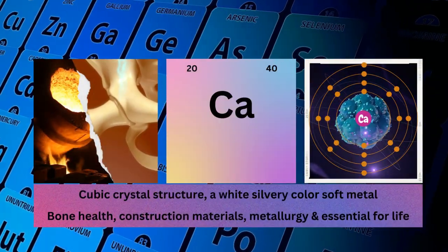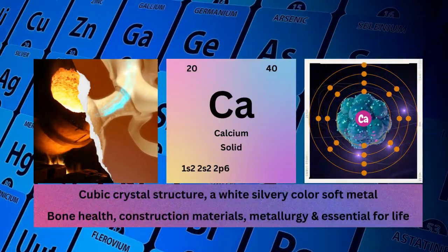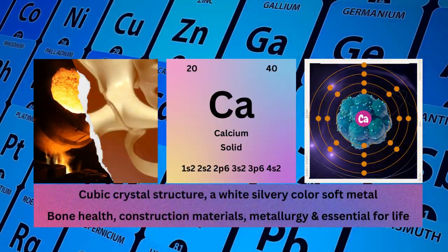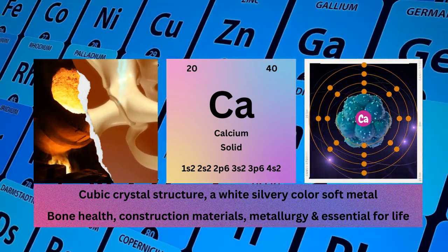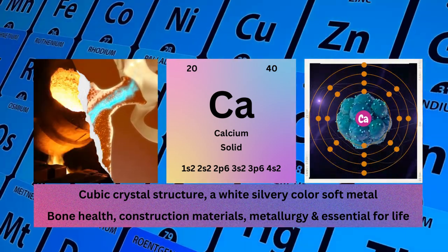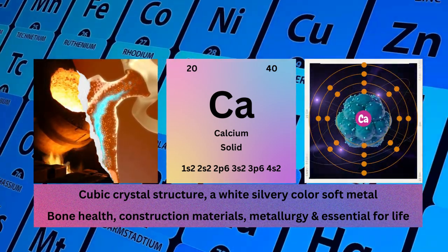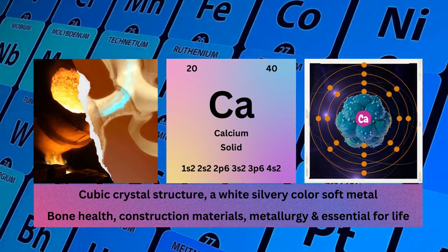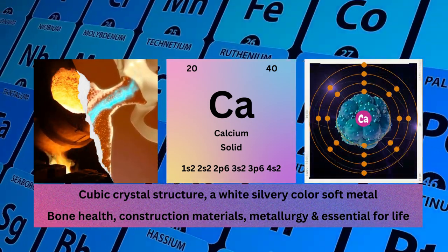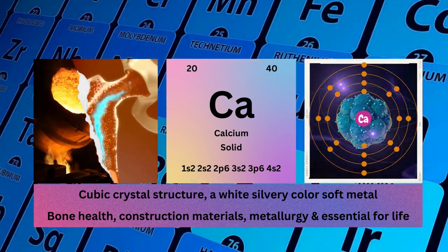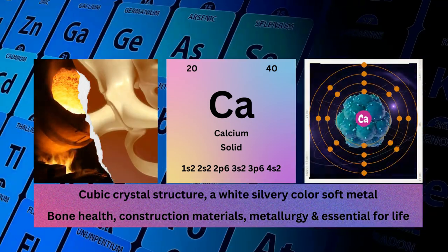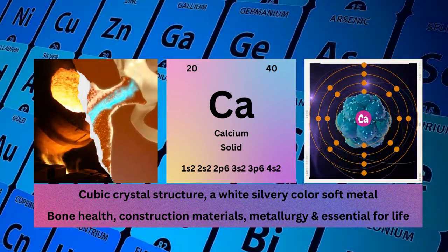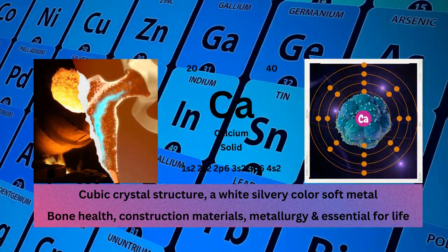Calcium, atomic number 20, mass number 40, symbol Ca, state solid, electronic configuration 1s²2s²2p⁶3s²3p⁶4s². Physical properties: cubic crystal structure, white silvery color, soft metal. Calcium used for bone health, construction materials, and metallurgy.